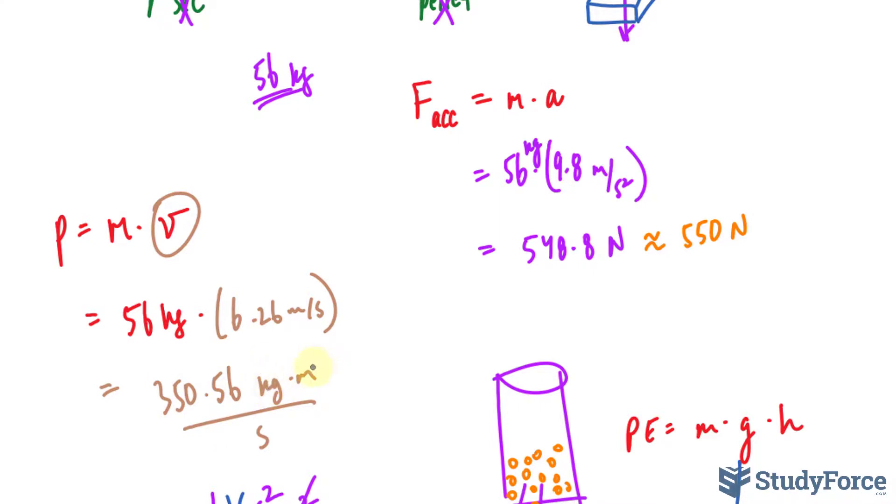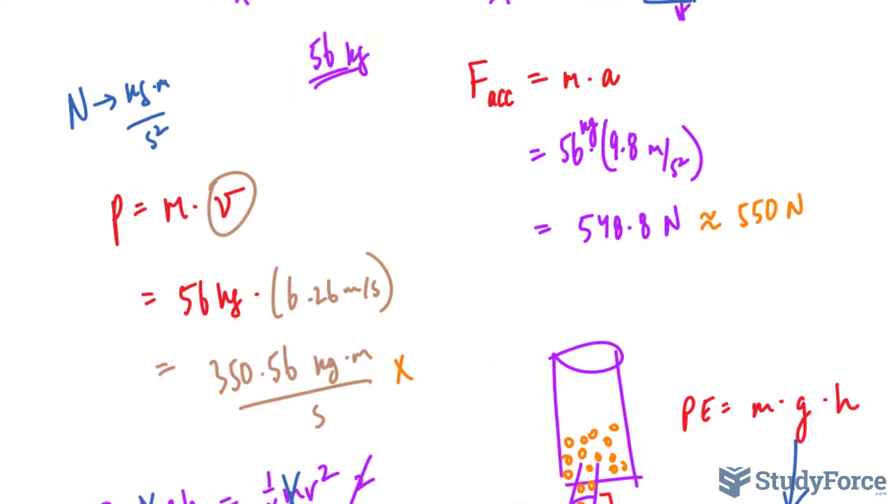If you take a look at this number right here, we have the units kilograms times meters per second. The units for newtons, which is force, is kilograms times meters per second squared. So what we can do at this point is multiply this value by 1 over 7 seconds.